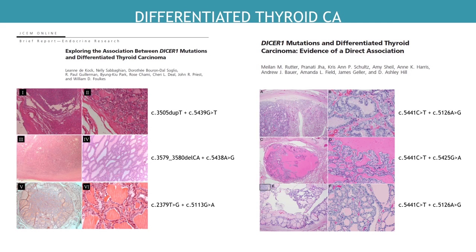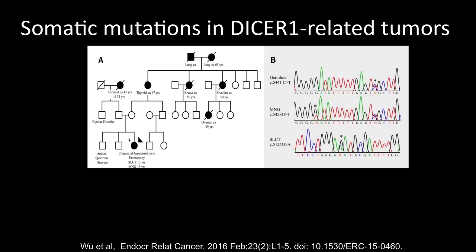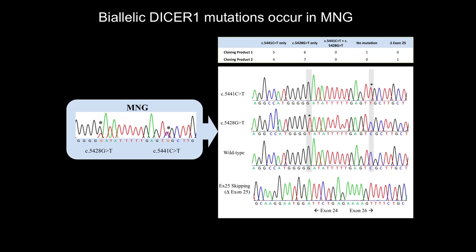What about somatic mutations in goiter? We published a case of a child with SLCT and goiter, both at age 13. Here's the germline mutation, here's the MNG with a somatic mutation. Both the goiter and the SLCT have 3B mutations. By doing cloning to determine cis or trans, we found the mutations never occurred together — therefore they must be in trans. Each nodule of this multinodular goiter seems to have a different 3B mutation, suggesting distinct clonal architecture.